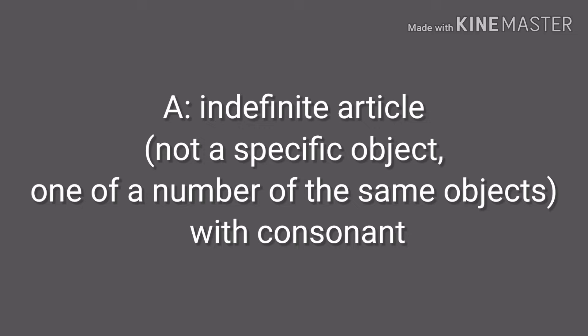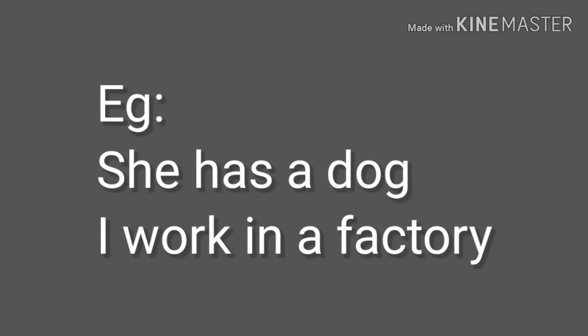Example: 'She has a dog.' We use the indefinite article 'a' because the first sound we hear in 'dog' is the consonant D. Another example: 'I work in a factory.' The speaker is referring to an unspecified factory — any factory — so we use 'a'. The word 'factory' also begins with the consonant F.